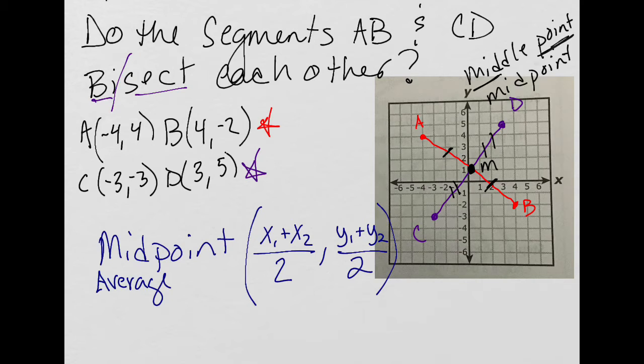So let's work for AB first. We want to find the midpoint of AB. So A has the point of negative four, four, and B has four, negative two. So I've labeled it x1, y1. x1 of negative four from A plus x2 of four from B, all divided by two. Then y1, which comes from A, is four, plus y2 from B, which was negative two, divided by two.